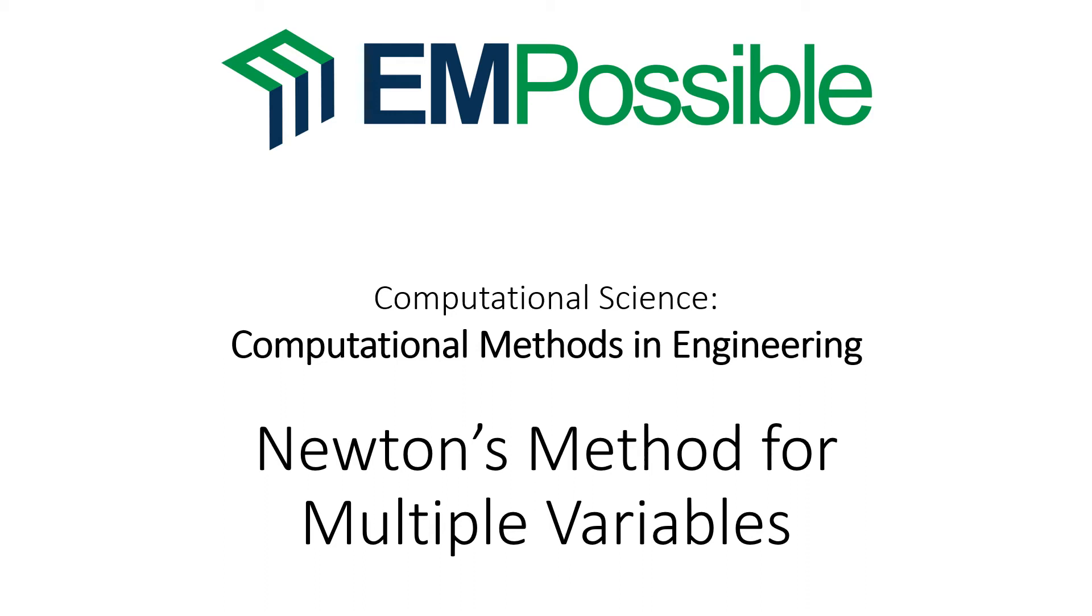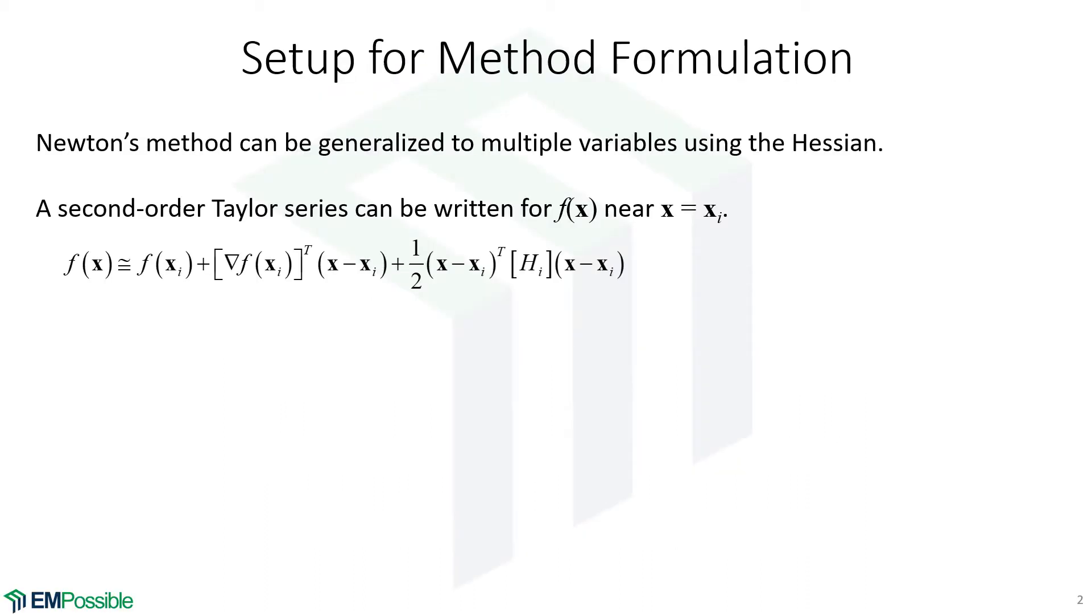Newton's method for multiple variables. Here we're going to set up deriving the update equation for Newton's method. In order to do this, we're going to have to make use of the Hessian.